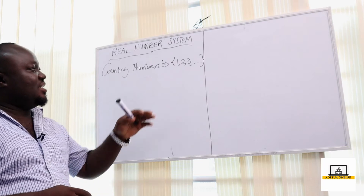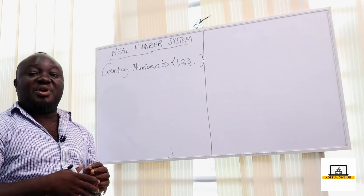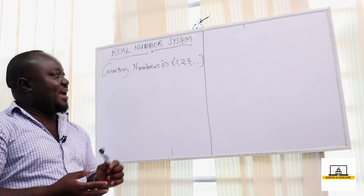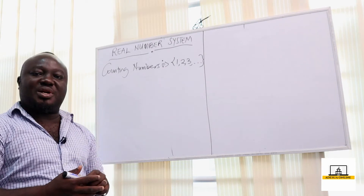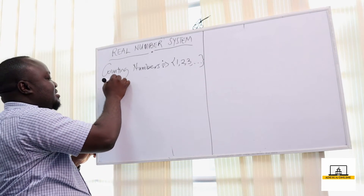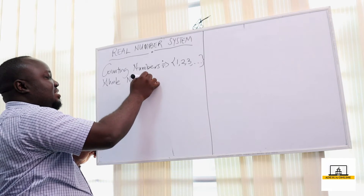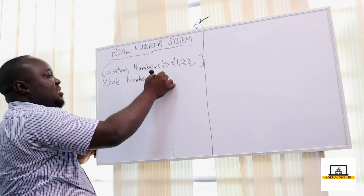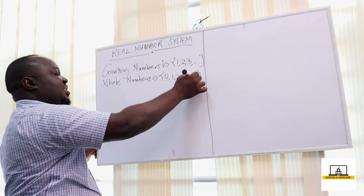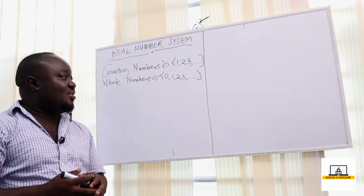Now when the operation subtraction is used on the set of counting numbers, we can have a situation where we have 2 minus 2 which is 0, and 0 is not part of the set of counting numbers. So we call them whole numbers — numbers which start from 0, 1, 2, 3 to infinity.